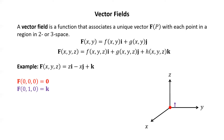F of (1,0,1): plugging in 1 for X, 0 for Y, and 1 for Z, we get i minus j plus k. Starting at the point (1,0,1), I move one unit parallel to the X axis, then one unit to the left parallel to the Y axis, and then one unit up parallel to the Z axis. You can see that trajectory as well as the vector itself drawn there in green.